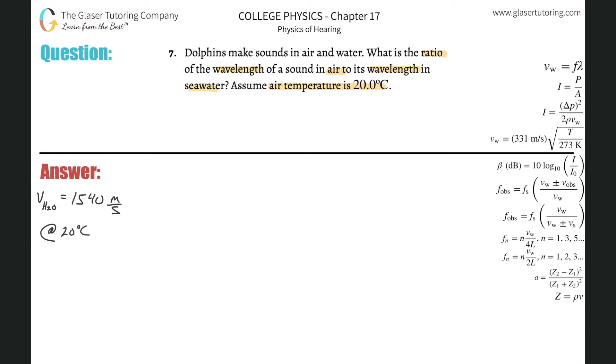So we have to find a ratio of the wavelength of a sound in air to its wavelength. So first thing is I have to find this ratio. Let's start with the ratio they want us to find. So the wavelength of sound in air divided then by the wavelength of sound in water or H2O. And so now how can we expand on this? Well, we don't know either of these.